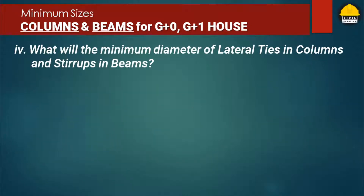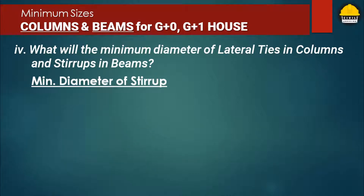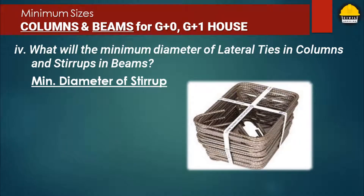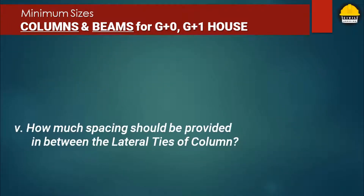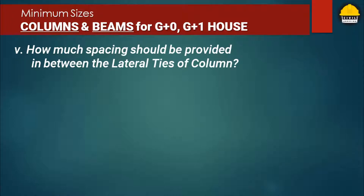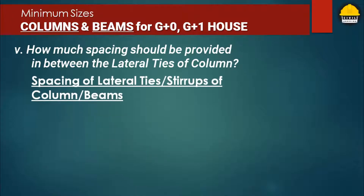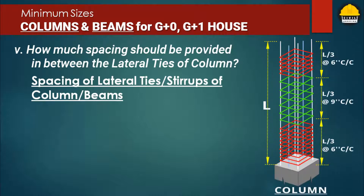What will be the minimum diameter of lateral ties in columns and stirrups in beams? The main functions of lateral reinforcements or stirrups in RC columns and beams are to prevent longitudinal reinforcement bars from buckling and to resist shear force, thereby contributing to avoiding shear failure. Providing lateral ties or stirrups at proper spacing confines the concrete enclosed between the lateral ties, which also reduces the chances of shear failure.